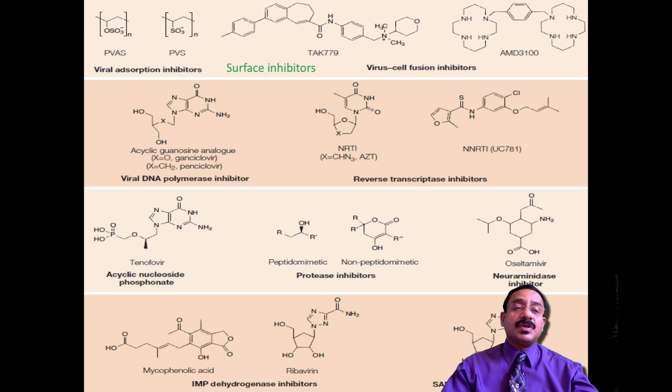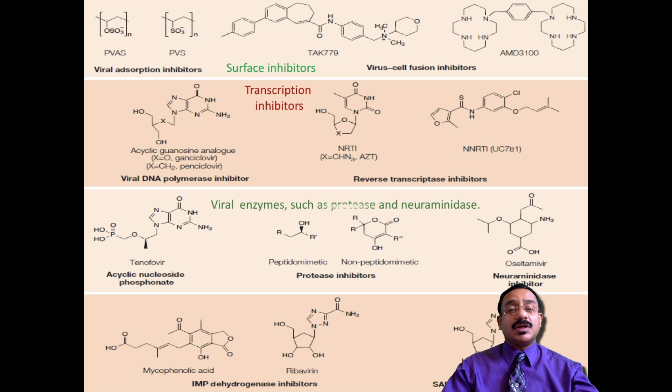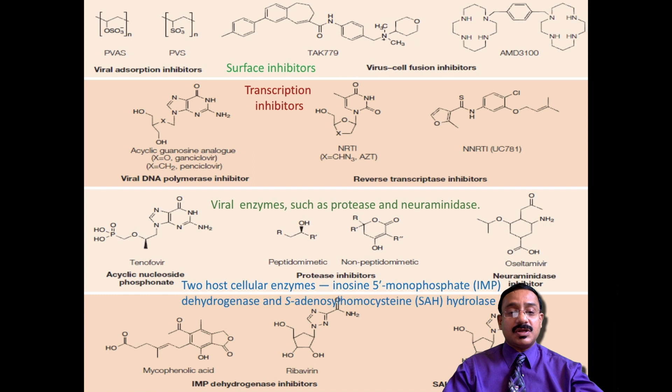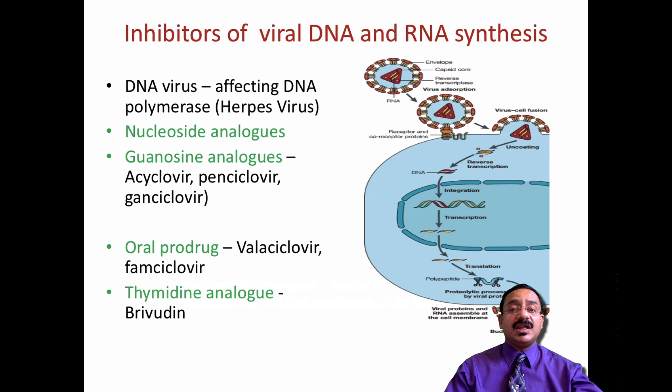To summarize the classification: absorption inhibitors are surface inhibitors. The second group focuses on transcription inhibitors. The third section inhibits viral enzymes such as proteases and neuraminidases. The fourth group inhibits two host enzymes: inosine 5-monophosphate dehydrogenase (IMP dehydrogenase) and S-adenosyl homocysteine (SAH) hydrolase.